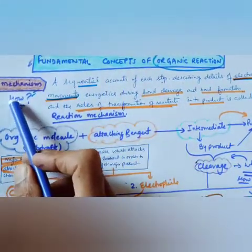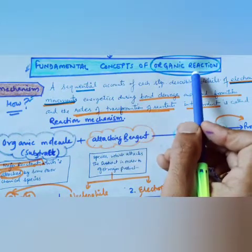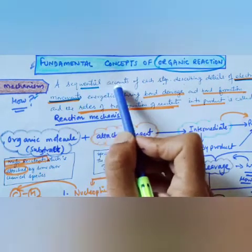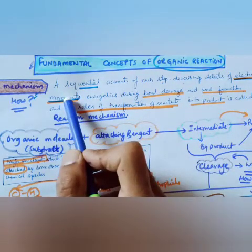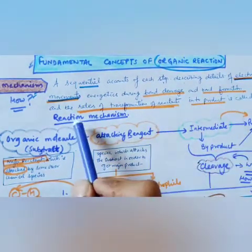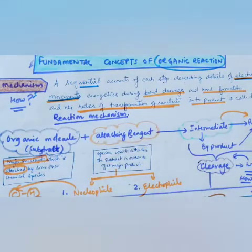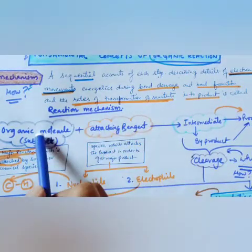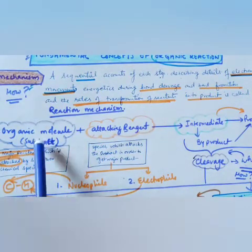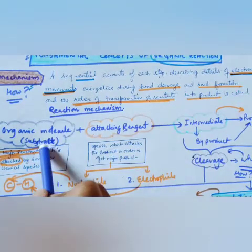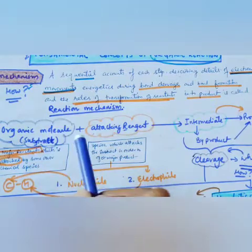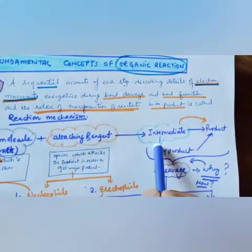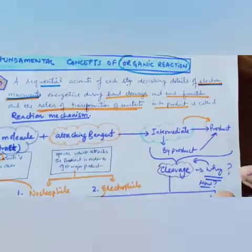Organic reactions are a little bit different from inorganic reactions. In organic reactions, the process proceeds in a sequential, step-by-step way: electron movement is the first step, then bond cleavage, then bond formation. The rate of transformation of reactant into product is called the reaction mechanism. There is one substrate and one attacking reagent; when the attacking reagent attacks the substrate, the substrate starts displacing its bond electrons, forming an intermediate, and then a product or by-product.